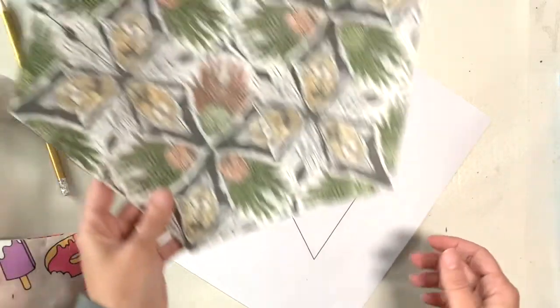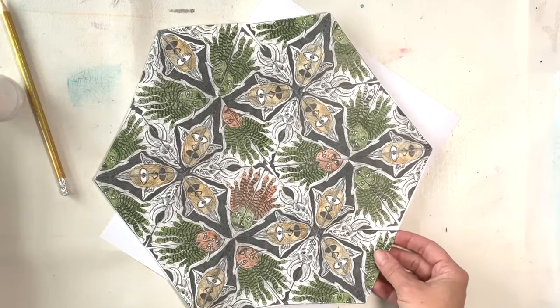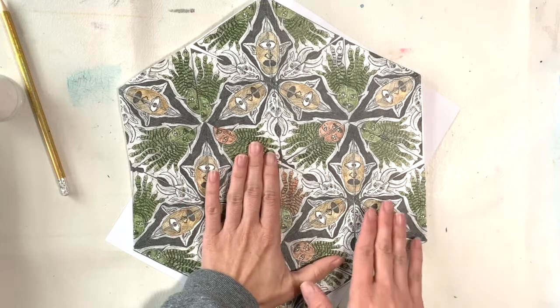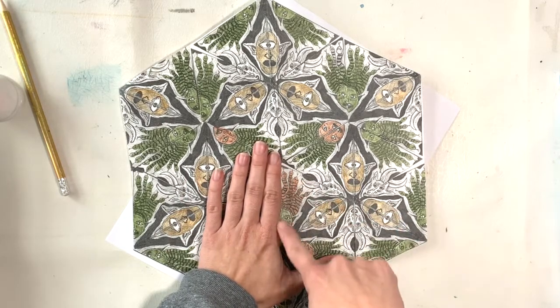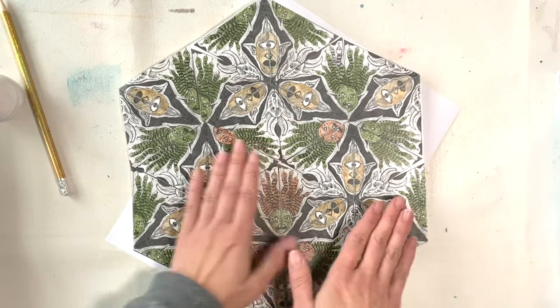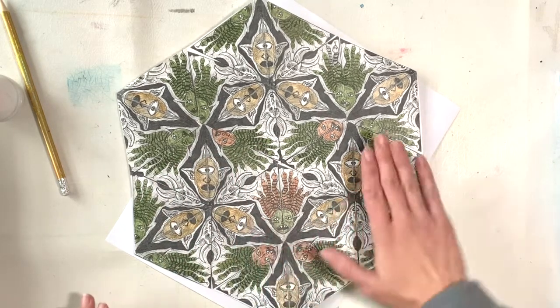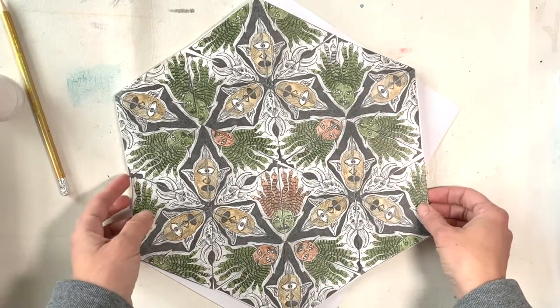So this is a previous student's work. This one was done using a photocopier, so not Google slides. As you see, this is a triangle shape and on each side of the triangle is a different face. We have the snake hair lady, the ogre, and then that other one over there.